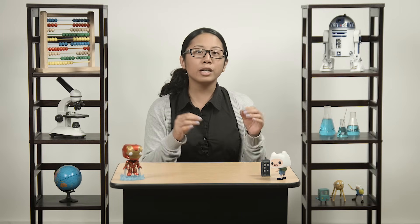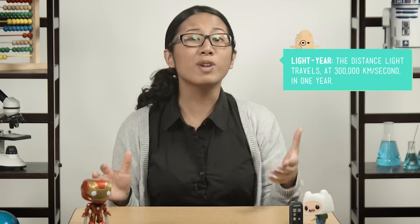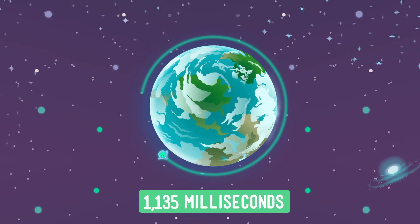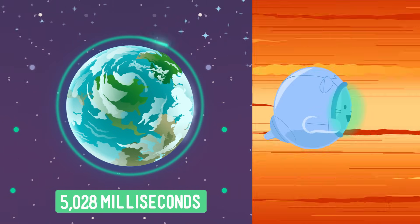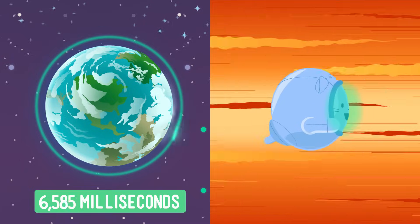Light is the fastest thing we know in the whole universe, clocking in at a whopping 300,000 kilometers per second. In one second, light can travel around the Earth, the whole Earth, seven times. It's moving so fast our brains can't detect that it's moving at all.